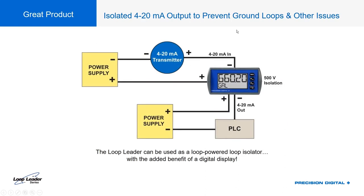The Loop Leader's 4-20 milliamp output lets you isolate two separate 4-20 milliamp loops. In a control cabinet scenario with a field power supply and transmitter on one side and a PLC loop power supply on the other, the Loop Leader provides electrical isolation between those two lines, making the system more noise resistant and preventing ground loops when wiring multiple systems into a PLC.